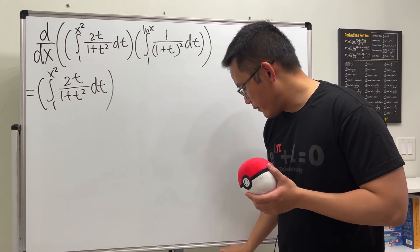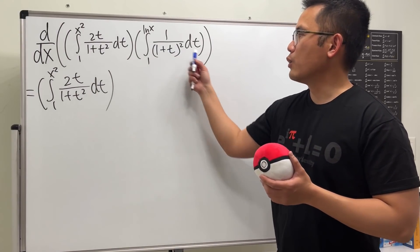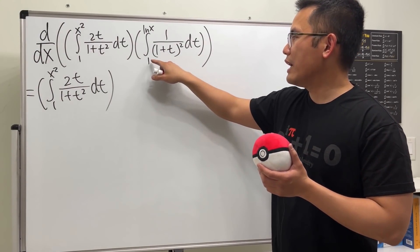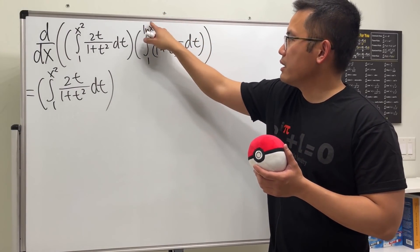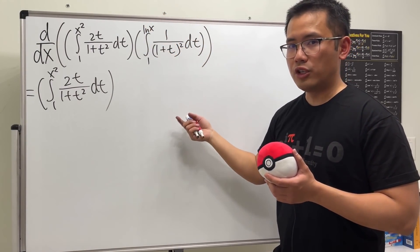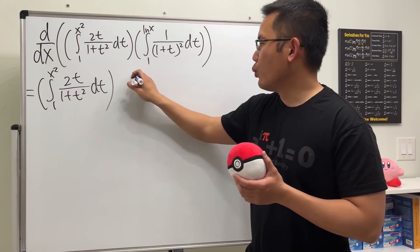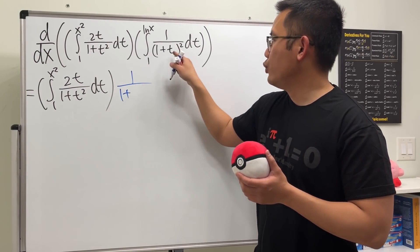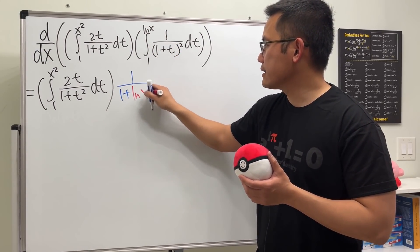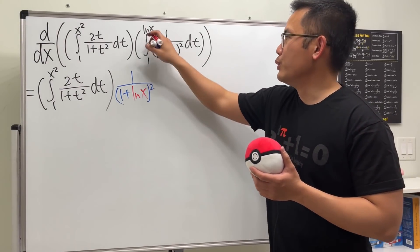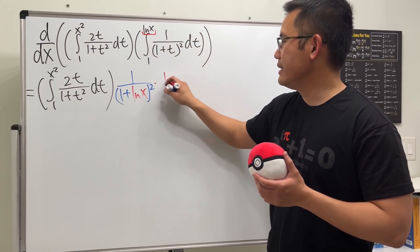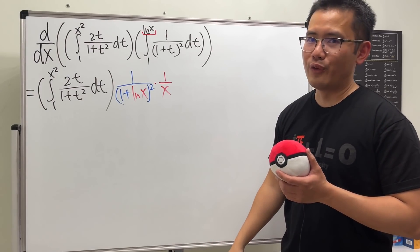Then we will have to differentiate the second one. To differentiate an integral function when you have a number to a function, all we have to do is plug in this function into the t and use the chain rule. So we will get 1 over 1 plus, replace the t with ln(x), and then we still have the parentheses to the second power, and then use the chain rule multiplied by the derivative of that, which is 1 over x.